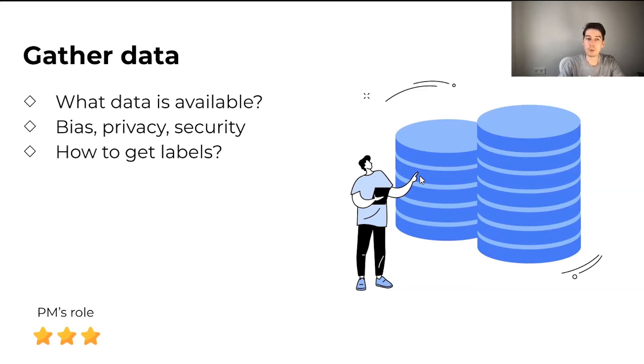And next, you need to think about how to get labels. Label is a term used in machine learning, meaning correct answers in our training data set. To train a model that would predict if the image is of a cat or dog, we would need a lot of examples of images with correct labels.